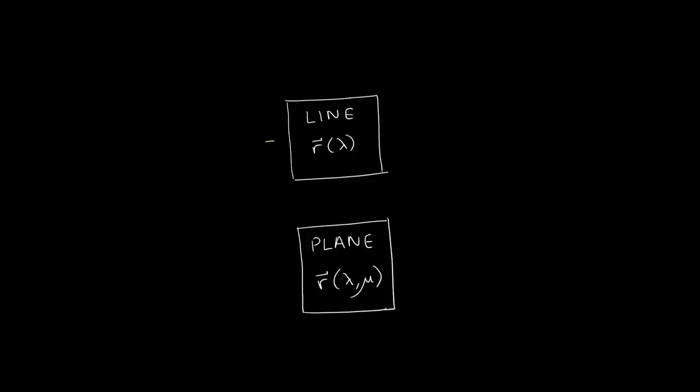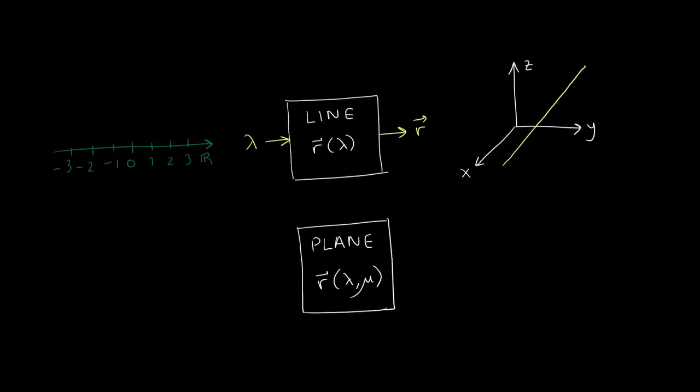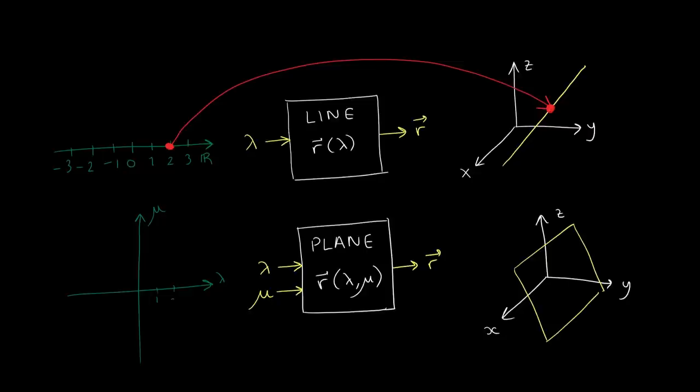Let's imagine our parametric equations as two functions called line and plane. The line has a scalar input lambda and outputs a position vector that represents the line. This line function maps the one-dimensional real number line to all the three-dimensional positions along the line. Each specific value of lambda is mapped to a fixed position along the line. Our function for the plane has two scalar inputs — which we could also see as a two-dimensional vector input — and it outputs a position vector on the plane.